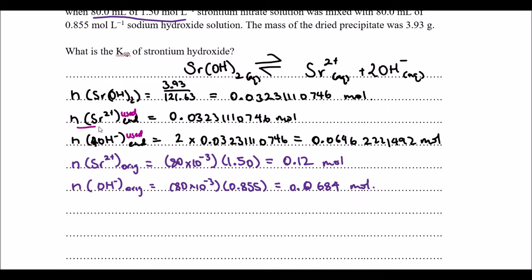Now let's have a look at what we have at the end. So strontium 2+ at equilibrium, the number of moles, is 0.12 subtracted by 0.03231110746. We'll get the final number once I've done the second part, which is the hydroxide.